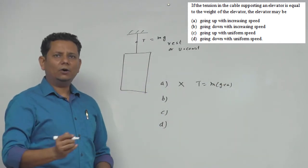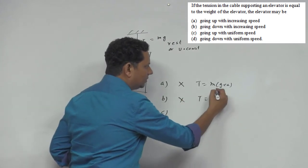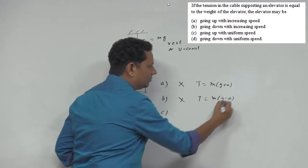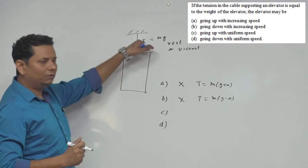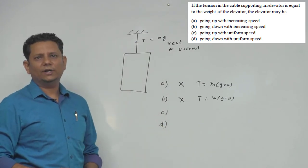Second is going down with increasing speed. This option will also not work. In that case, the tension will be mg minus, because it's going down and your speed is more, so acceleration will also be downward.